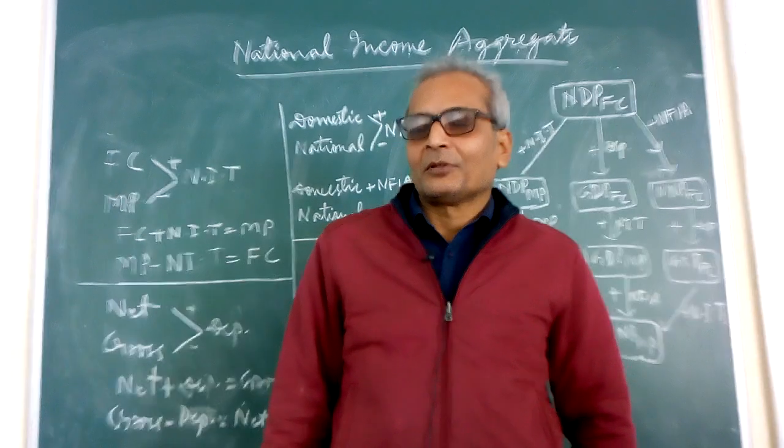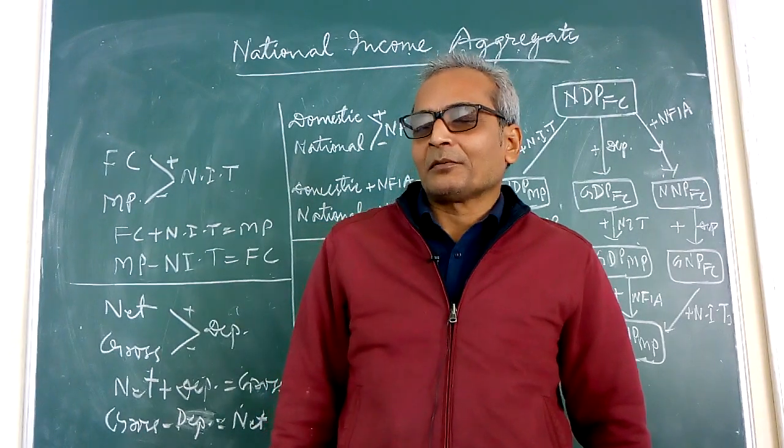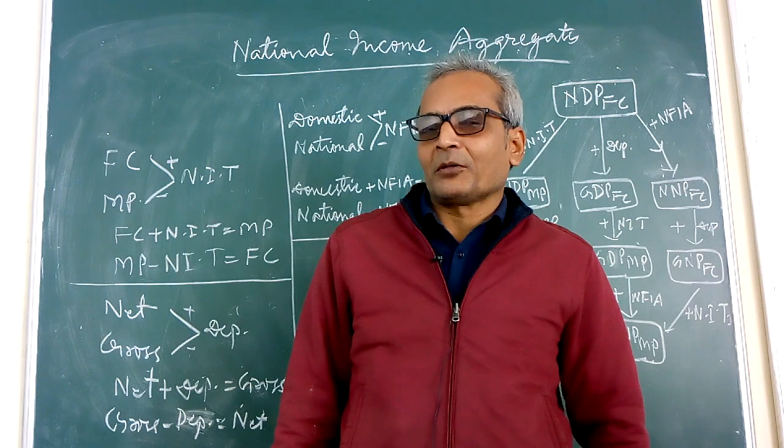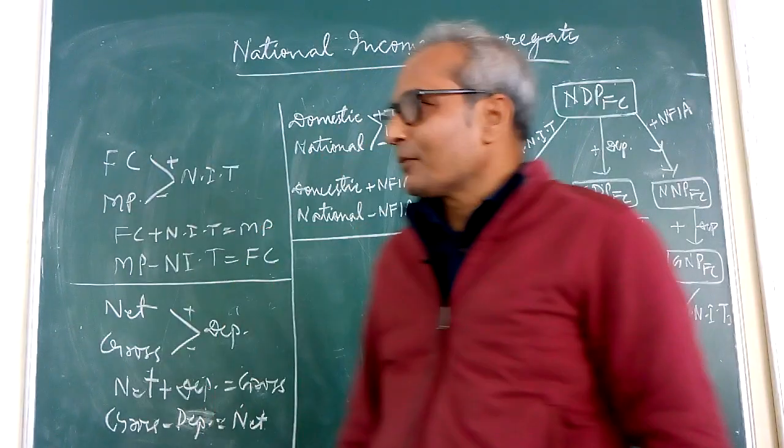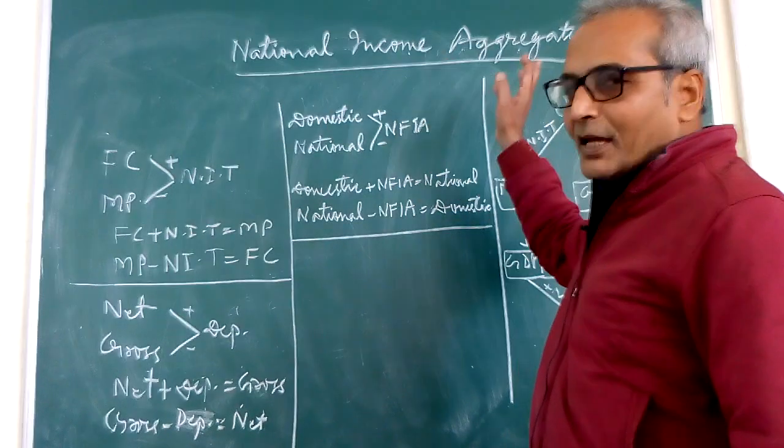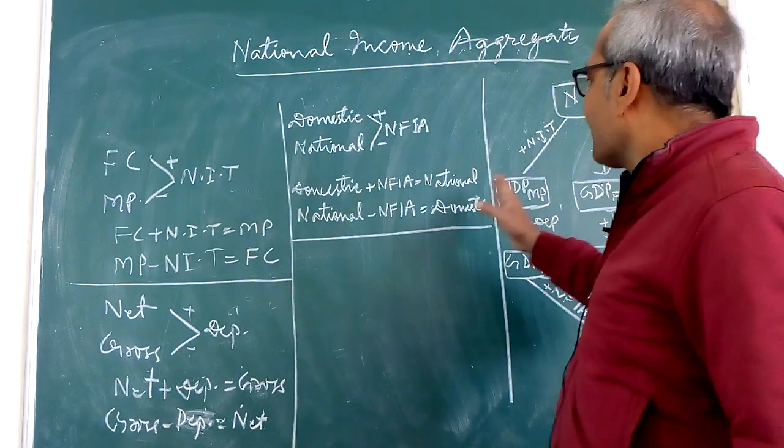Right now we will talk about chapter 1 in macroeconomics that is national income. And today we will be talking about national income aggregates like NDP,